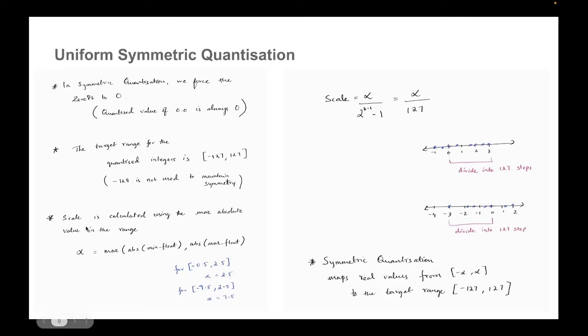Then you have the scale, which is calculated using a slightly different technique. So we define something called alpha, which is the max absolute value in that floating point range that we want to map. The formula is the formula is like this, max of absolute value of min float and absolute value of max float. So what we are trying to do is what is the maximum absolute value in that range. If you take this range minus 0.5 to 2.5, alpha is 2.5. If you take this range minus 7.5 to 2.5, the alpha is 7.5. And we define scale like this. We take alpha and divide it by this quantity. For int 8, it will be 127.